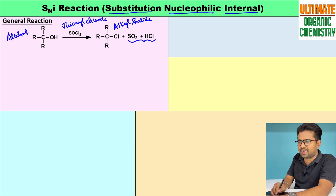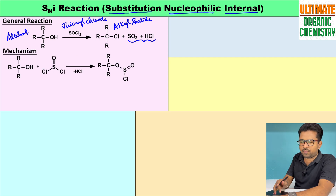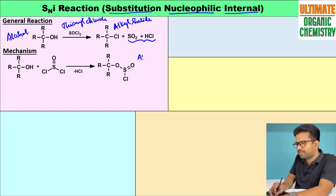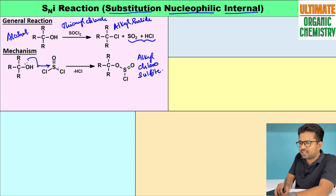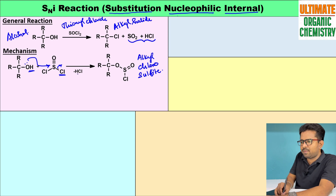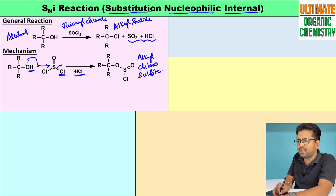The SNI mechanism involves a two-step process. The first step is the formation of alkyl chlorosulphite. The oxygen lone pair electrons attack the sulfur atom of thionyl chloride, and as a result, the Cl leaves as Cl⁻. The H⁺ and Cl⁻ combine and leave as HCl, forming alkyl chlorosulphite as the product.